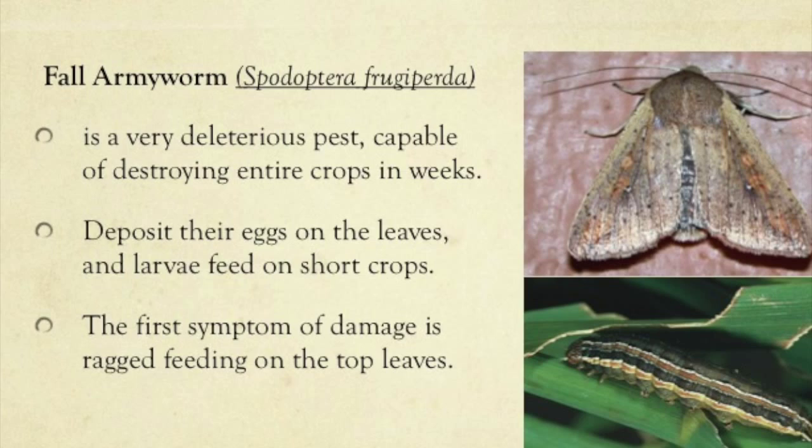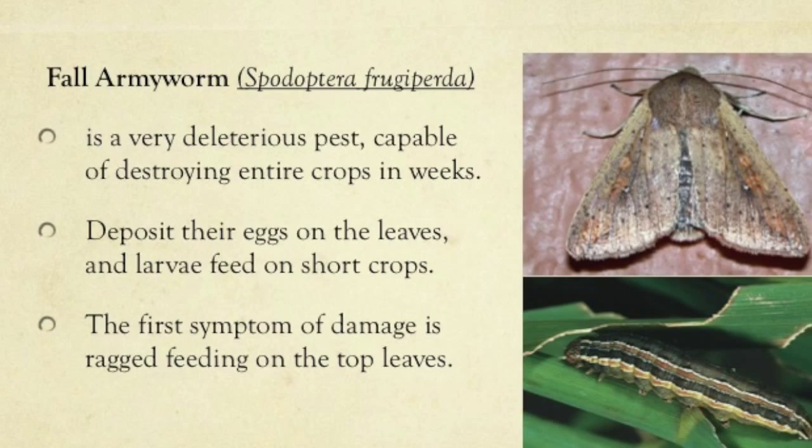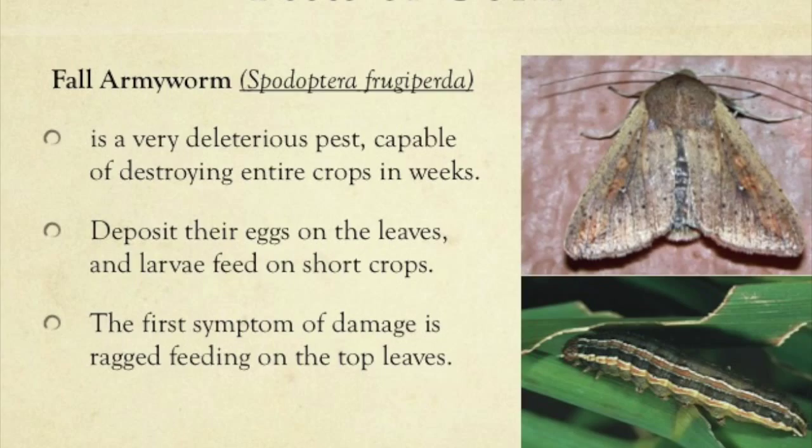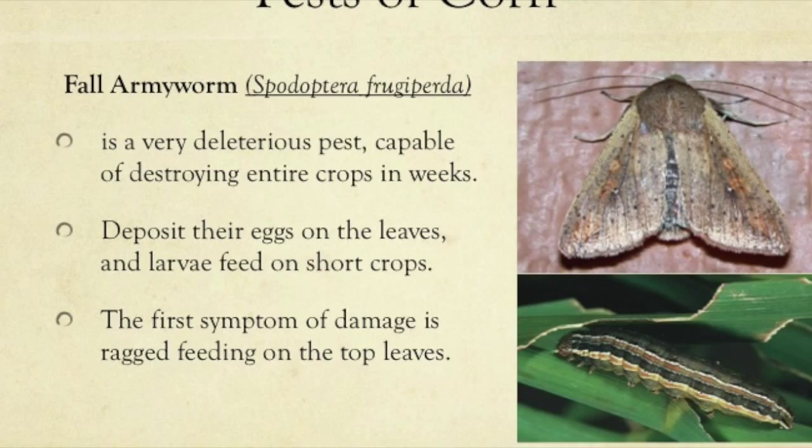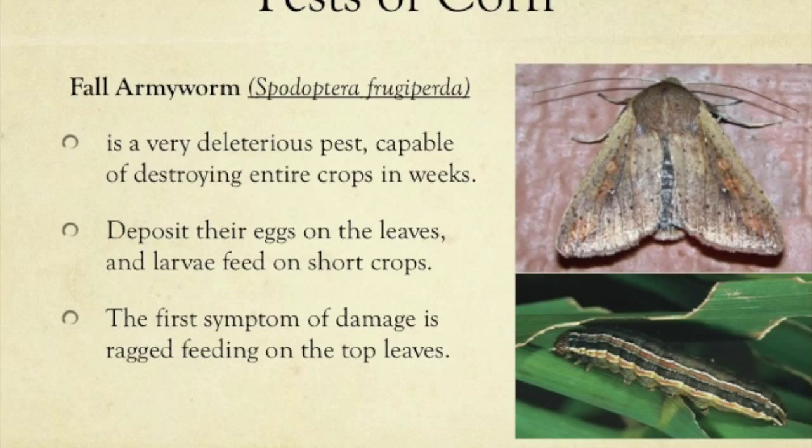The first insect pest of corn is the fall armyworm, also known as Spodoptera frugiperda. They deposit their eggs on the leaves of grasses and corn plants. Larvae hatch a week later and develop over a period of approximately three weeks. Damage is observed most frequently in no-till fields. They are a very deleterious pest, capable of destroying entire crops in a matter of weeks. The pest gets its name from its habit of marching in large numbers from grasslands into crops.